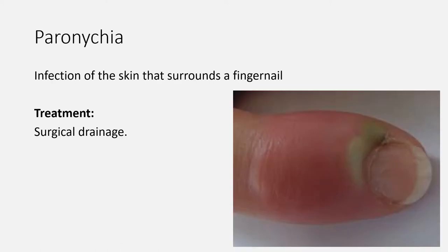Another common localized infection in the hand is paronychia — an infection of the skin that surrounds a fingernail. In the early stages, oral antibiotics such as flucloxacillin or clarithromycin may cure it. Once pus has developed, it must be drained under local anesthesia. Once drained, do not give antibiotics unless there is cellulitis, spreading infection, or the patient is immunocompromised and/or has diabetes.